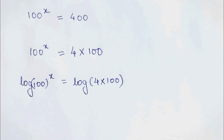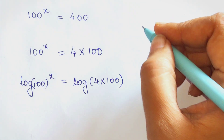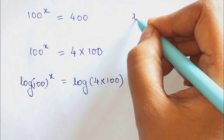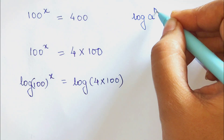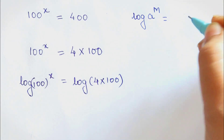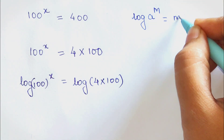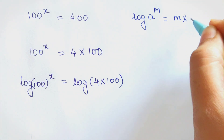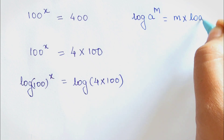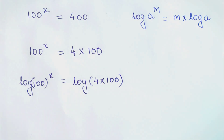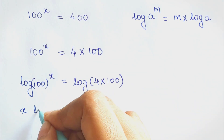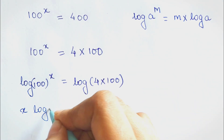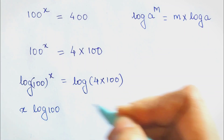A very important thing to remember: log of any number raised to an index can be written as the index multiplied to the log of that number. Using the same logic, we take x ahead and it gets multiplied to log of 100.